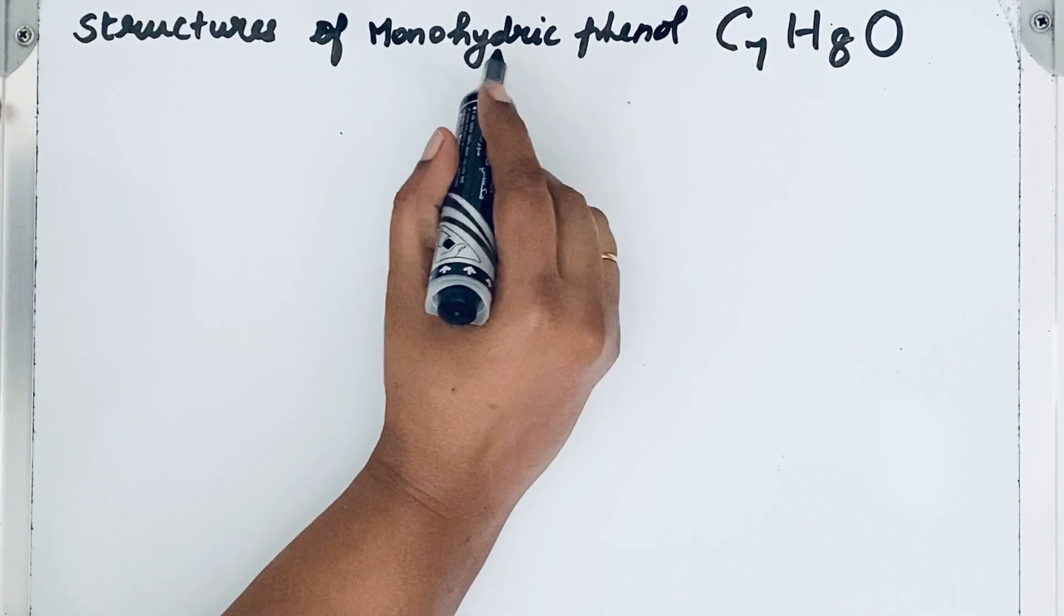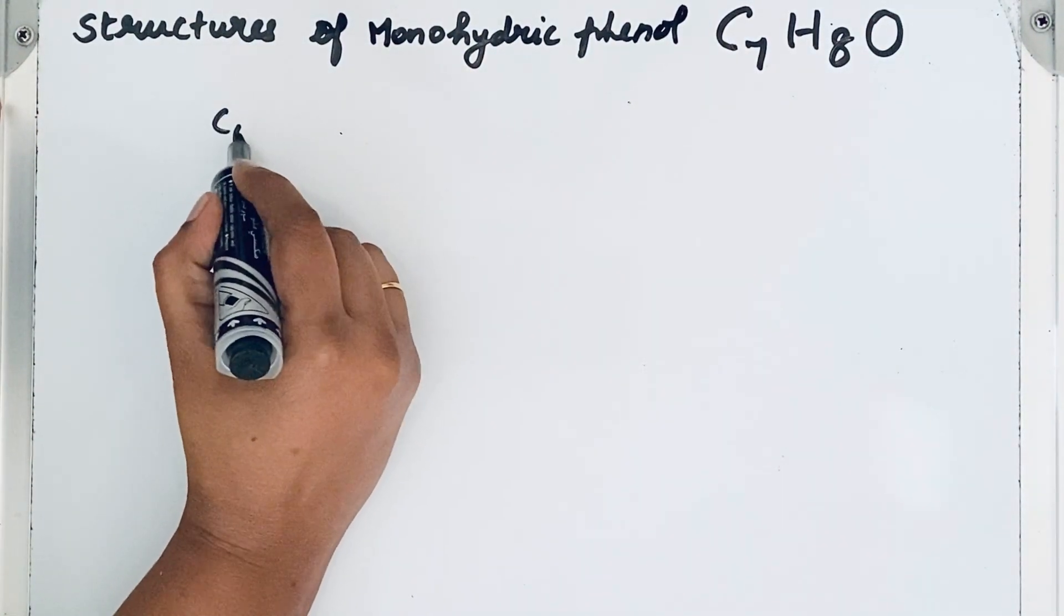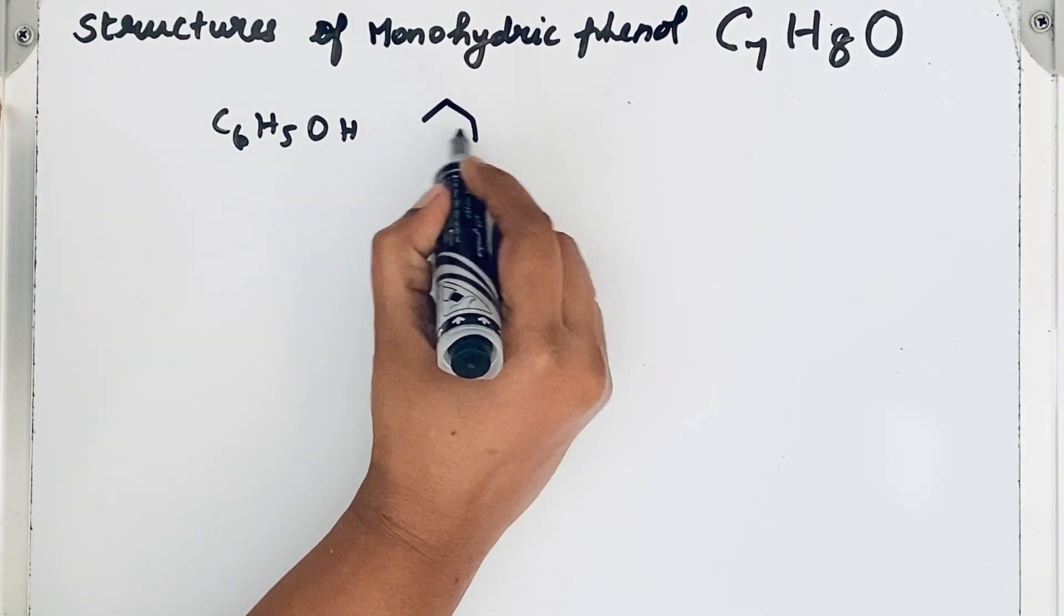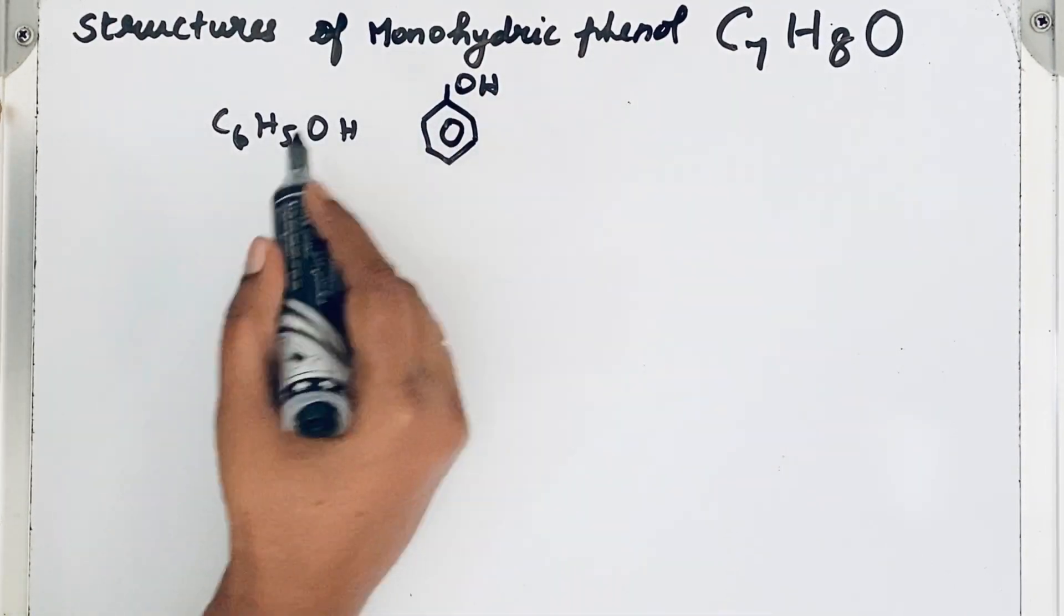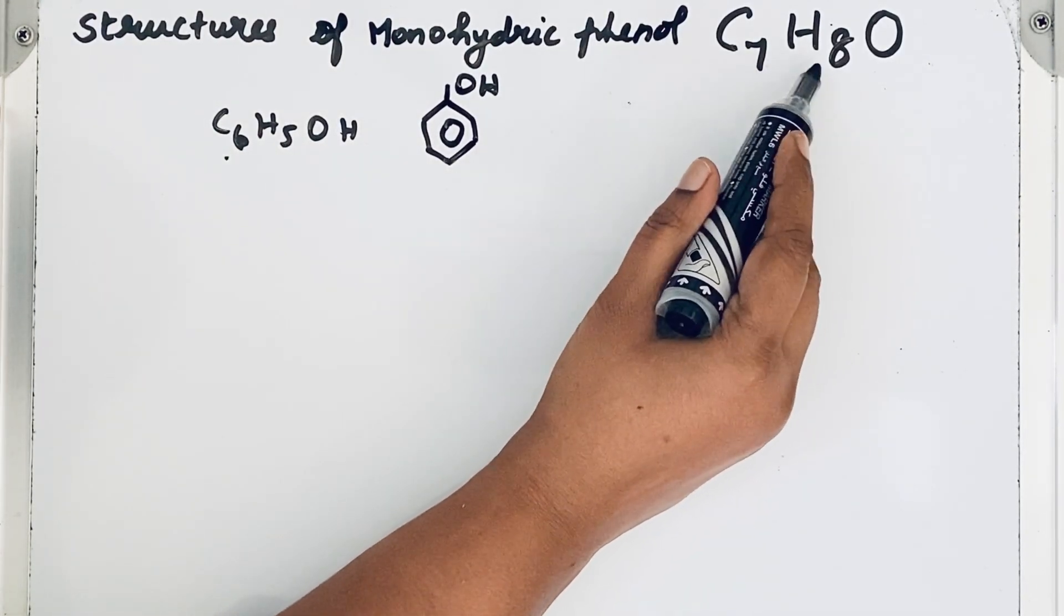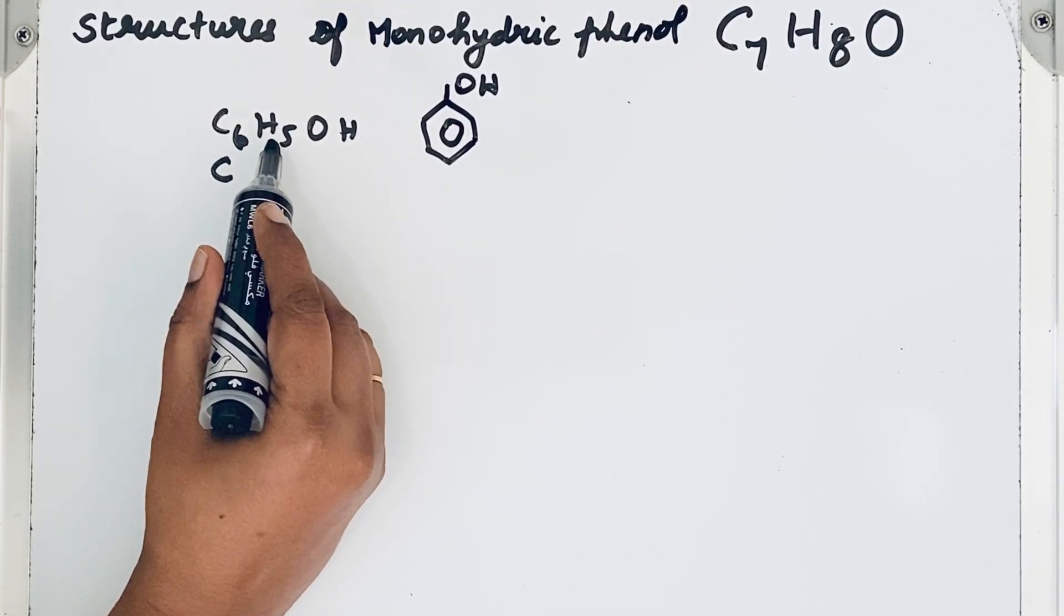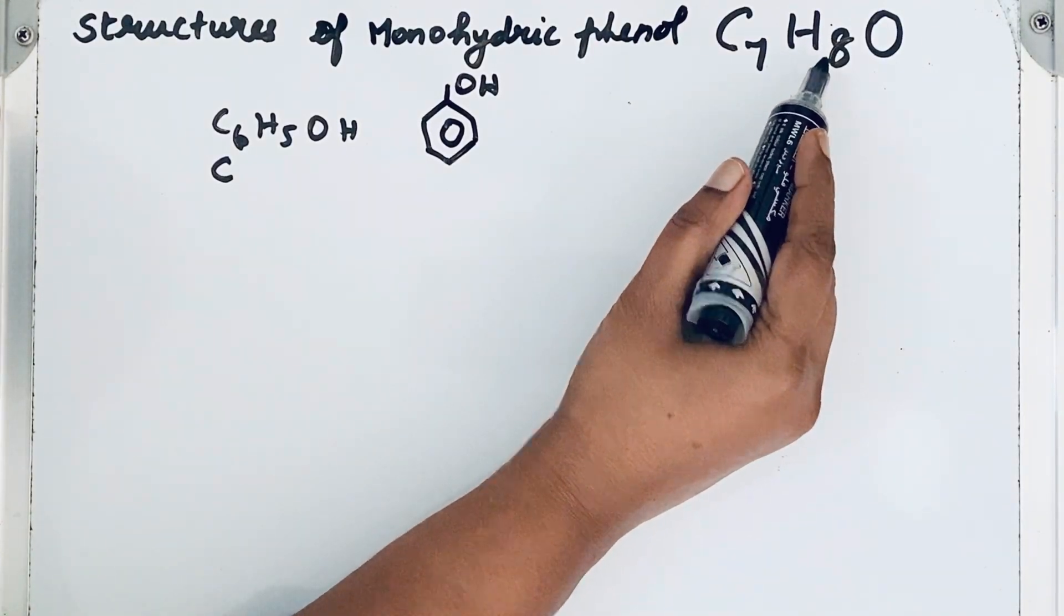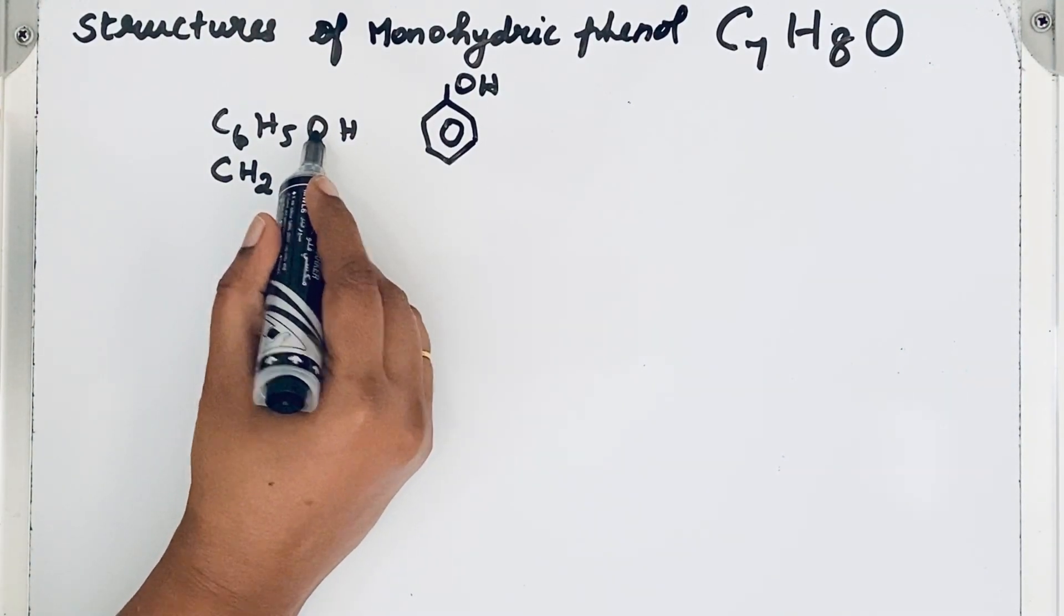Monohydric means only one OH group is present, so phenol C6H5OH. If you look at the molecular formula C7H8O, one carbon is remaining, then hydrogen five plus one is six, but here there are two more hydrogens available, so let us take it like CH2. Already one oxygen atom is here, also one oxygen atom.